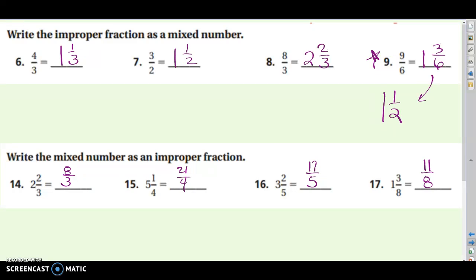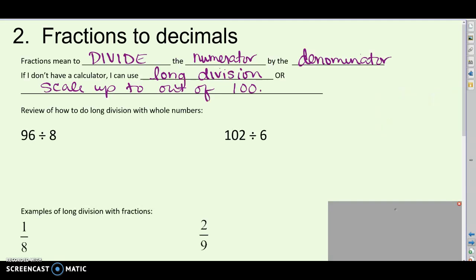Let's go on to fractions and decimals, converting between fractions and decimals. A fraction, another way to think of a fraction is as a division problem. For example, like three-eighths, another way of thinking that is three divided by eight. So, fractions can mean to divide. We would divide the numerator by the denominator. And there's two ways we can do that. If we don't have a calculator, we can use long division that we learned in, like, at farms, if not before that, or scale up to be out of 100. And we'll go over both of those methods.